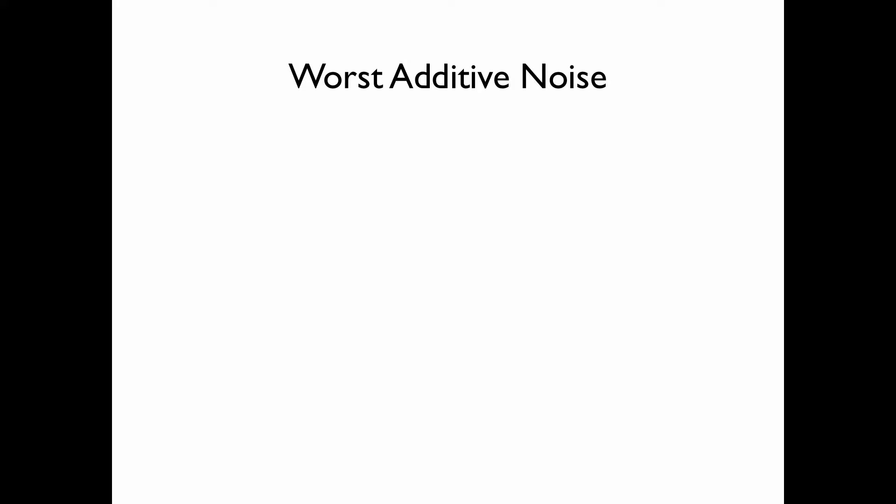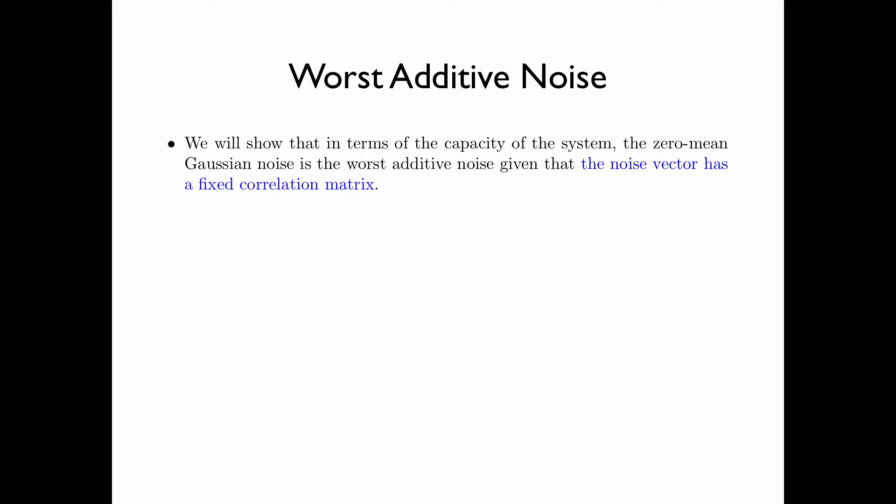What does it mean by worst additive noise? We will show that in terms of the capacity of the system, the zero mean Gaussian noise is the worst additive noise, given that the noise vector has a fixed correlation matrix. That is, the zero mean Gaussian noise always gives the minimum capacity. In other words, the capacity results that we have obtained for the zero mean Gaussian noise can be regarded as the worst case results.